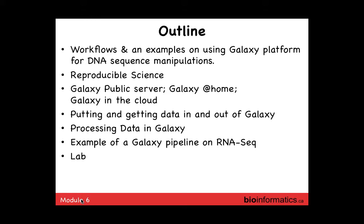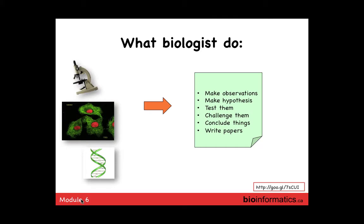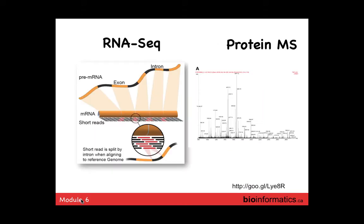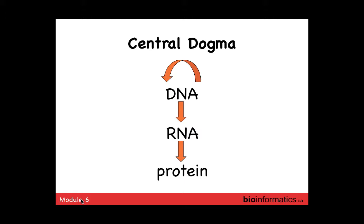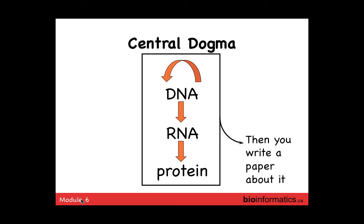What do biologists do? We make observations, form hypotheses, challenge them, draw conclusions, and write papers — increasingly in the context of RNA-seq, protein mass spec, or interaction pathways. The central dogma is DNA makes RNA makes proteins. What I call the NCBI version of the central dogma is: DNA makes RNA makes proteins, and then you write a paper about it. The challenge with reproducibility in science is that a lot of the information about the experimental process is only described in the publication.